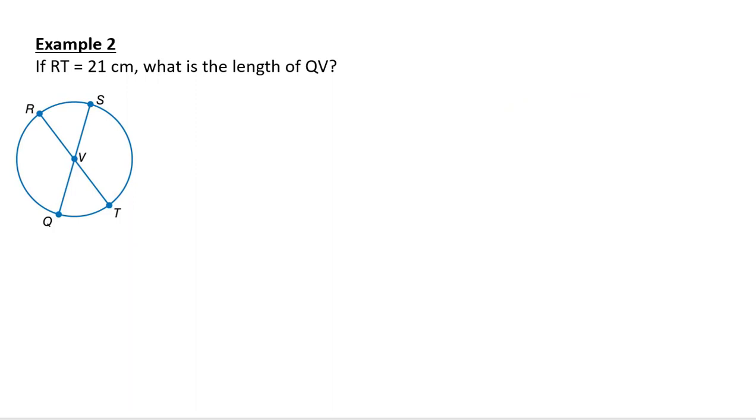For RT. If RT is 21, what is the length of QV? So the diameters of the circle are all congruent. So RT consists of two radii. So the whole thing is 21. And each one of the radii is congruent. So that splits this diameter in half. So this is 10.5. This is 10.5. All the radii of a circle are congruent. So QV is 10.5, half the diameter.